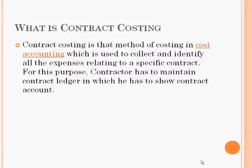First of all, we define contract costing. Contract costing is that method of costing in cost accounting which is used to collect and identify all the expenses relating to a specific contract. There are lots of contracts, but we have to calculate the cost of a specific contract.